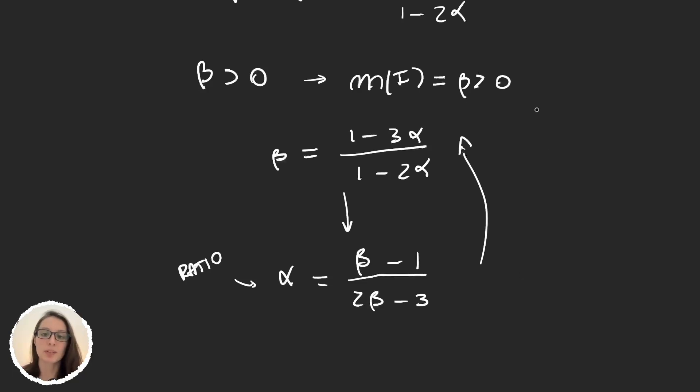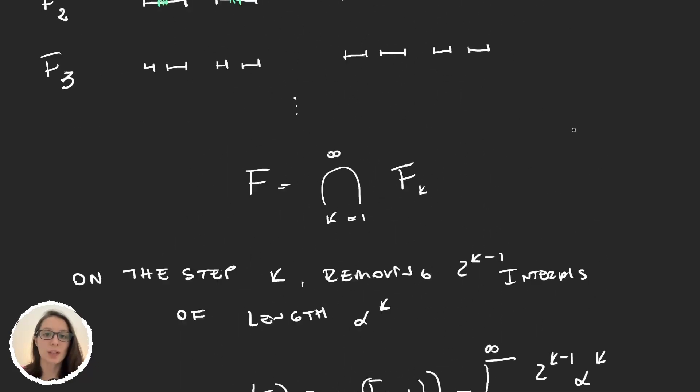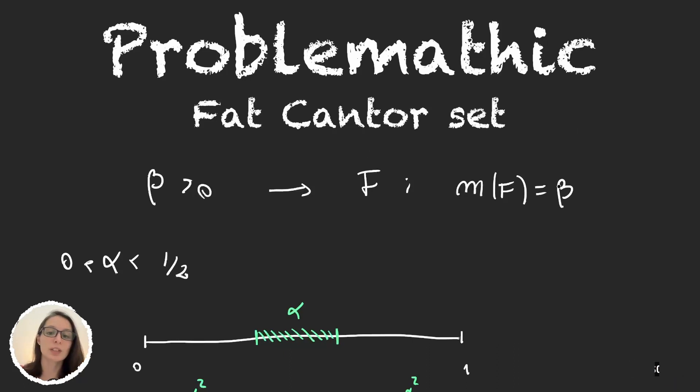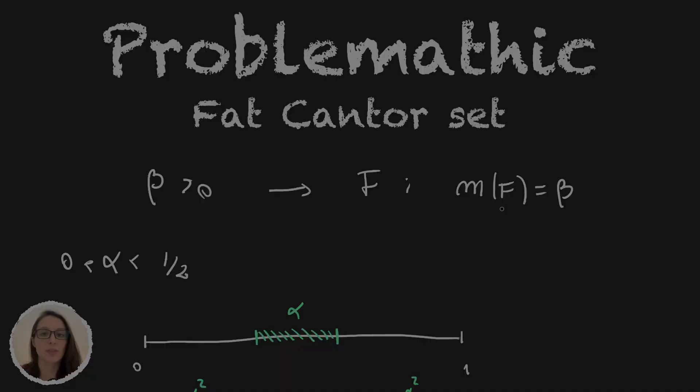And this will be positive. So this is what generalizes the definition of a Cantor set. And it's called fat Cantor because it's getting a measure that's positive.